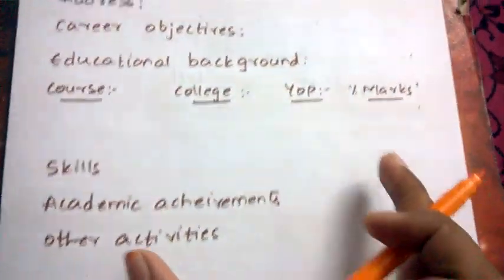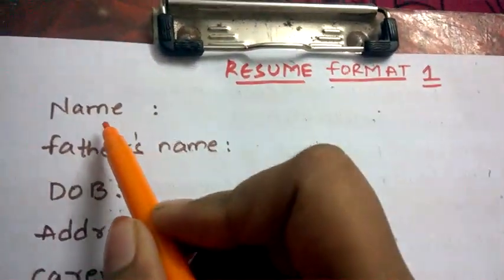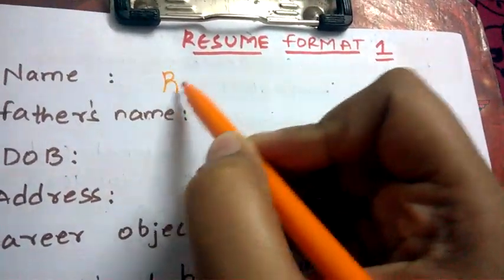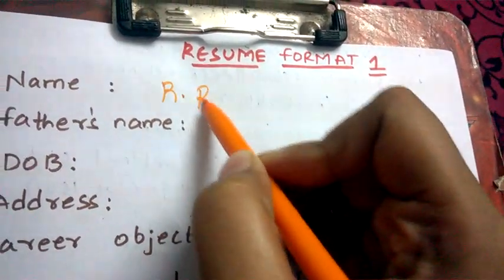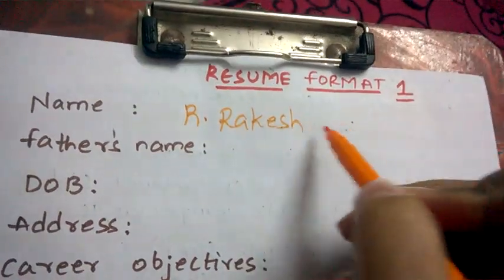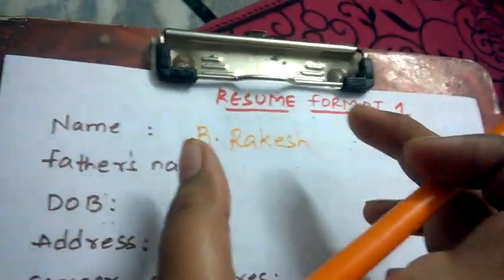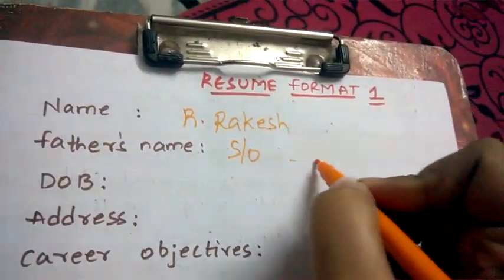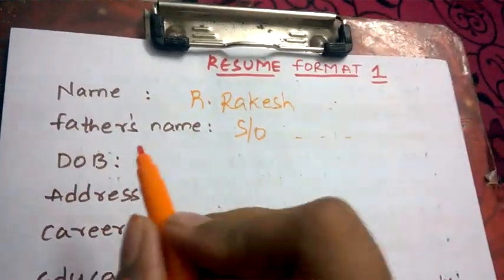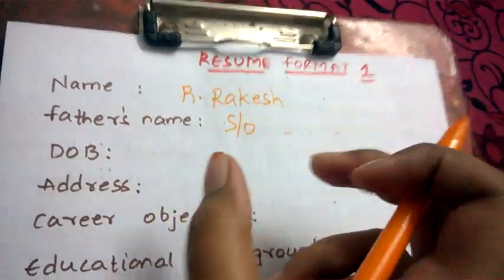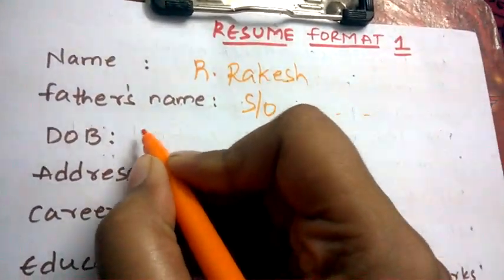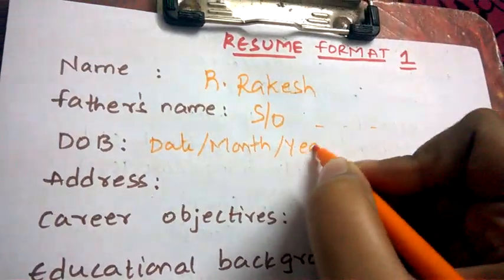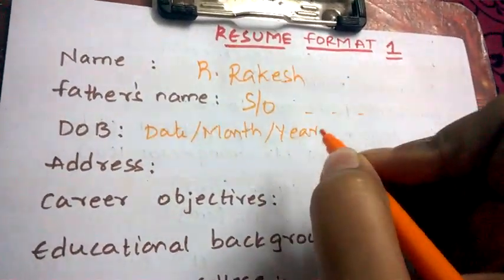This is the common format of a simple resume. First, you need to mention your name — keep it simple, for example 'Rakesh'. No need for lengthy names. Next, mention your father's name: 'Son of so-and-so.' Then add your date of birth in the standard format: date, month, year.